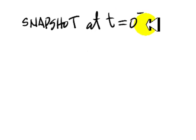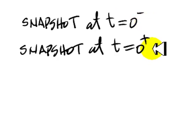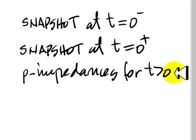Snapshot at t equals zero minus. Snapshot at t equals zero plus. Solution of the circuit in the p operator domain for t greater than zero.